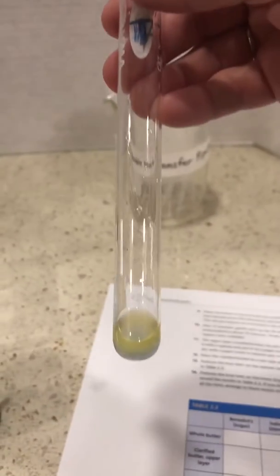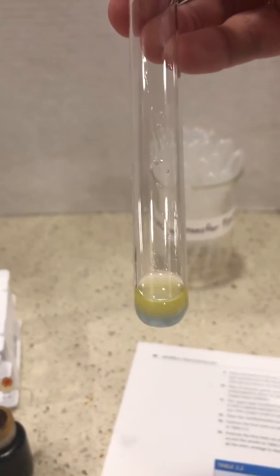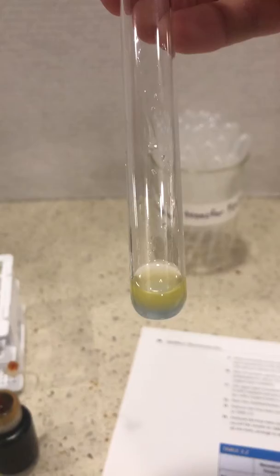Now I don't know if you can see this very well, try to put it on white. The blue bottom layer is actually the biuret and the butter, the top layer, is floating above.